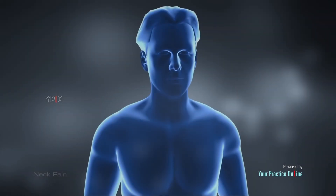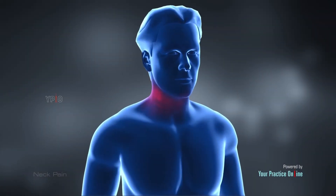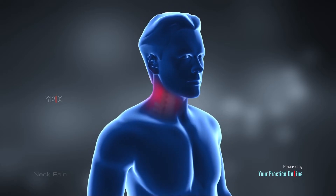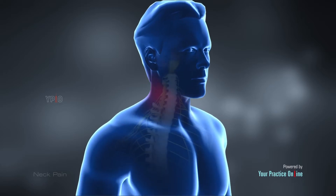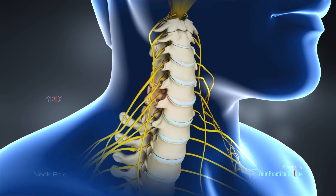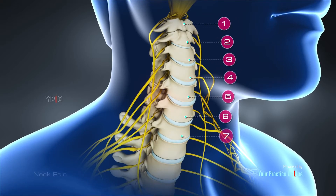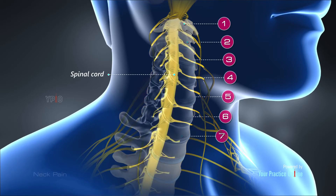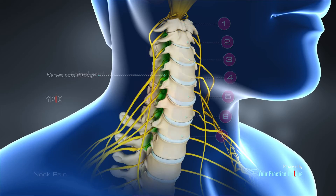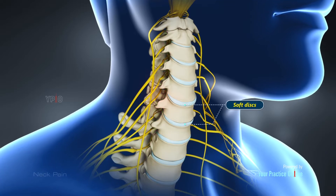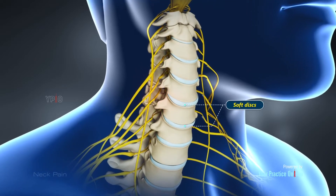Neck pain is a common condition that affects most people at some point in their lives. The causes can be varied and can affect different structures in the neck. The neck has seven vertebral bones, which surround and protect the spinal cord. Nerves pass through spaces between the vertebrae to communicate with the rest of the body.